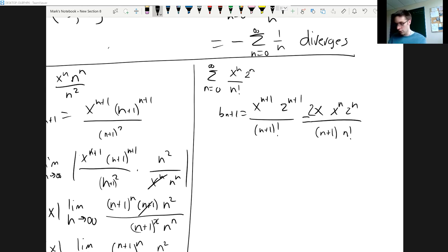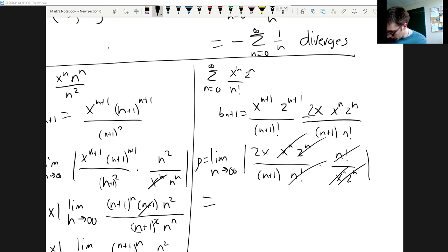So when I take the limit as n goes to infinity to compute my ratio, I'll have 2x times x^n 2^n all over (n+1) times n factorial, multiplied by the reciprocal of our terms which is n factorial over x^n 2^n. And notice a whole bunch of things cancel.